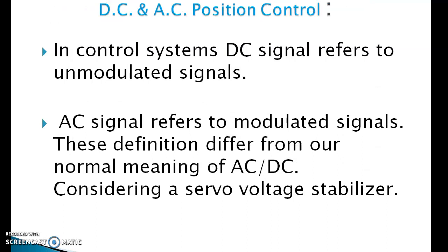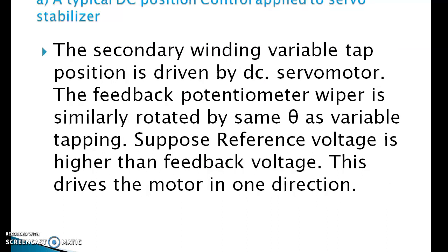First, a typical DC position control operates servo stabilizers. The secondary winding variable tap position is driven by DC servomotors. The feedback potentiometer wiper is similarly rotated by some theta as variable tapping.